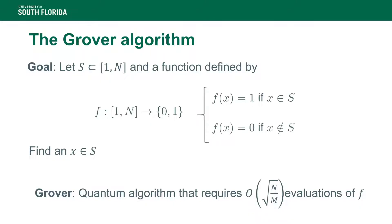The setup of Grover's algorithm is the following. We assume that we have a function defined on indices from 1 to n to {0, 1}, and a subset S of {1 to n} such that f evaluates to 1 if x is in S and 0 otherwise. With probability 50%, we can find a marked element — an element in S — with only square root of n over m evaluations of f using a quantum computer.